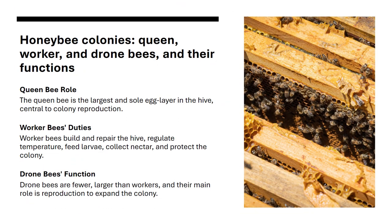Honeybee colonies have a single large queen bee who lays eggs. Worker bees build and maintain the hive, feed larvae, collect nectar, and protect the colony. Drone bees, which are fewer and larger than workers, help with reproduction.